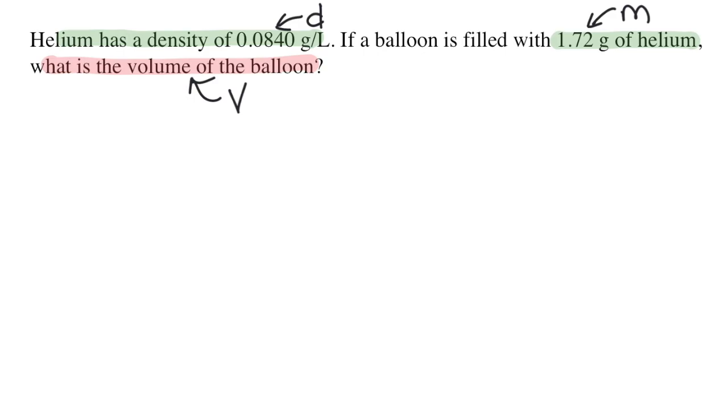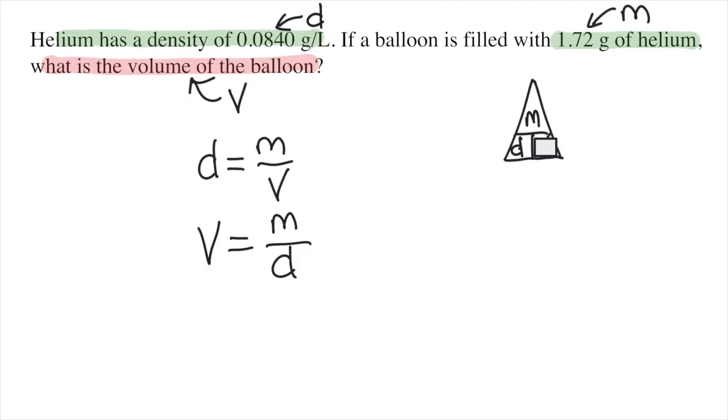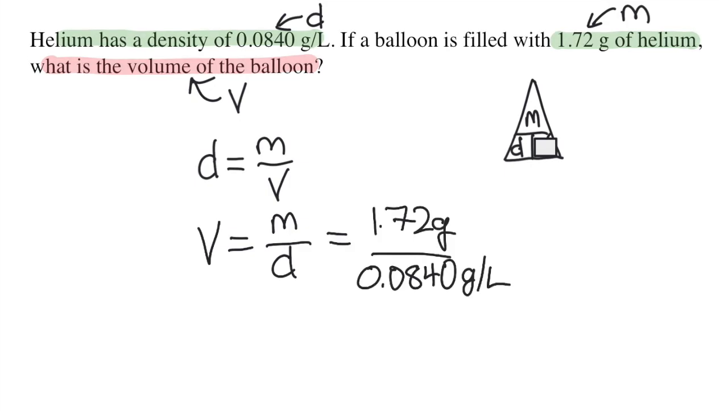I'm going to write the equation down now. d equals m over v. I'm going to use the triangle tool to rearrange it and solve for volume. So if I cover up the v, the tool tells me to divide m over d. I organized all the information already, so I can just plug it into the equation like this.